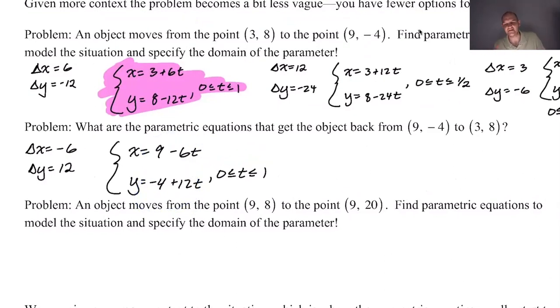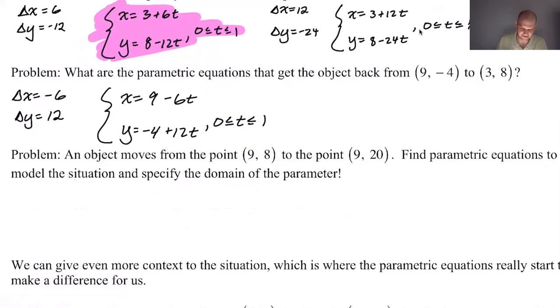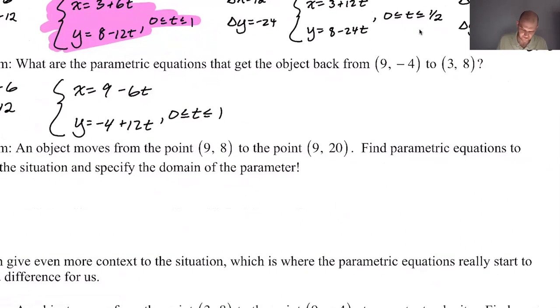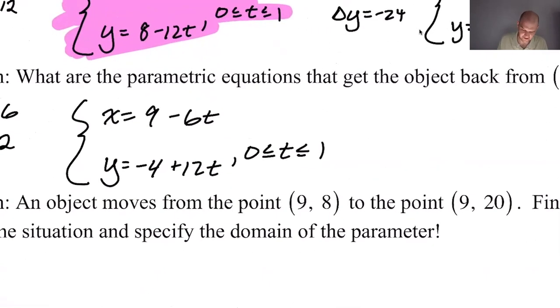The issue that I have with this, and it's not a big issue, but the issue I have with this is that to get from (3, 8) to (9, -4) took us 0 to 1. So if we're using 0 to 1 again, what's really happening? It's not like the same object going from here to here and then here to here. It's like we have two objects that are just going like this. We don't really want that, or I don't really want that. So what I would prefer is to somehow fix this. This is okay. Not great. Don't settle.